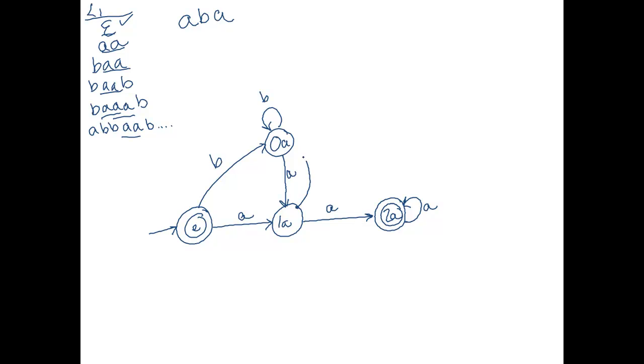So we're going to go up to 0A on a B. And then when I saw the last A, I would come back down into 1A, and then I would be done with my input, so I would reject. So we've handled that case.